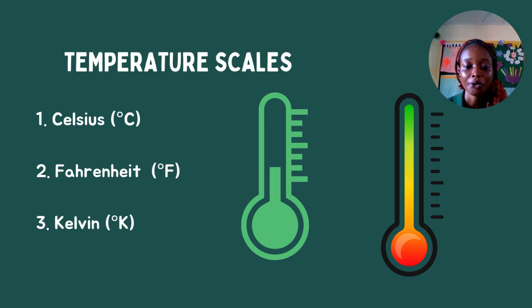I hope we've learned something about heat and temperature today. I hope we can differentiate heat from temperature, and that we know the natural and artificial sources of heat, the tools used to measure temperature, and the various temperature scales. That brings us to the end of today's class. As homework, look around you and identify various sources of heat — natural or artificial — and leave your answers in the comment section. I look forward to hearing from you, and I hope to see you all in our next class. Bye!